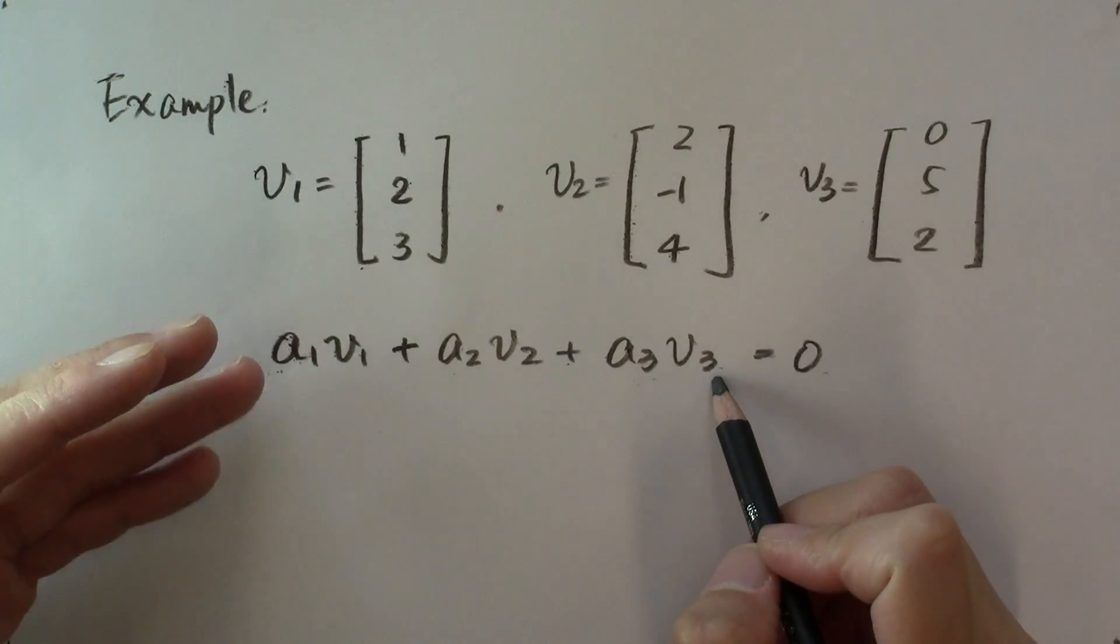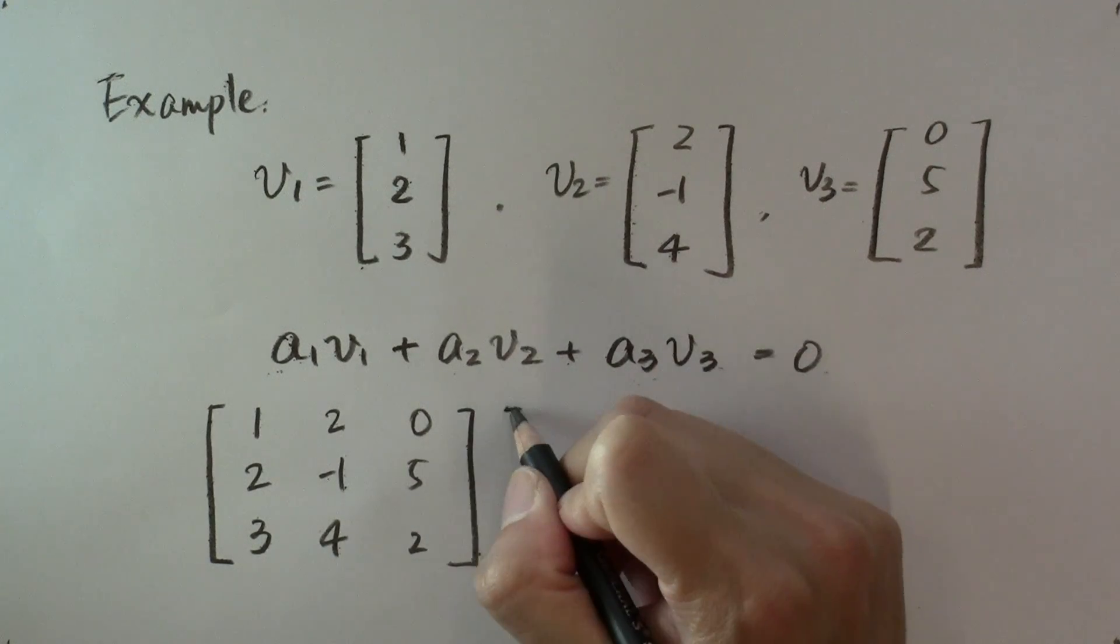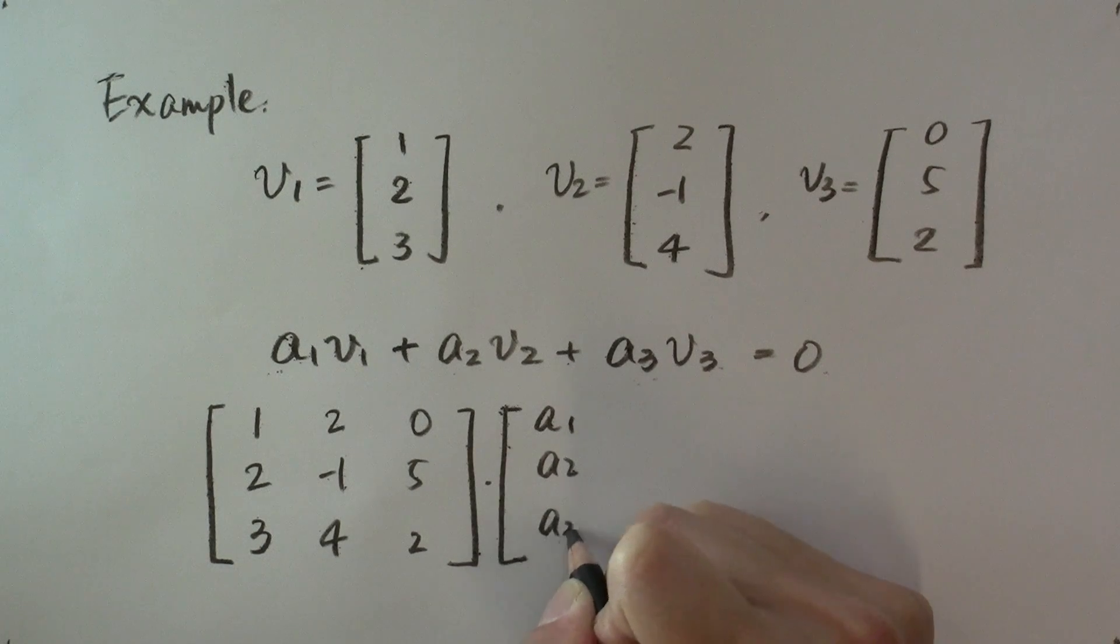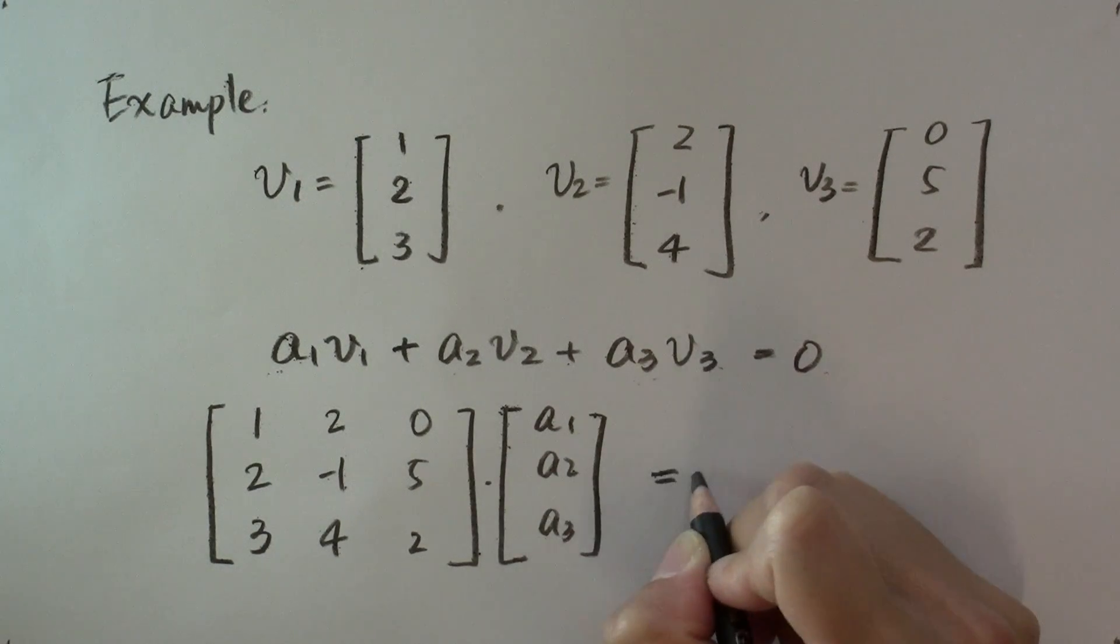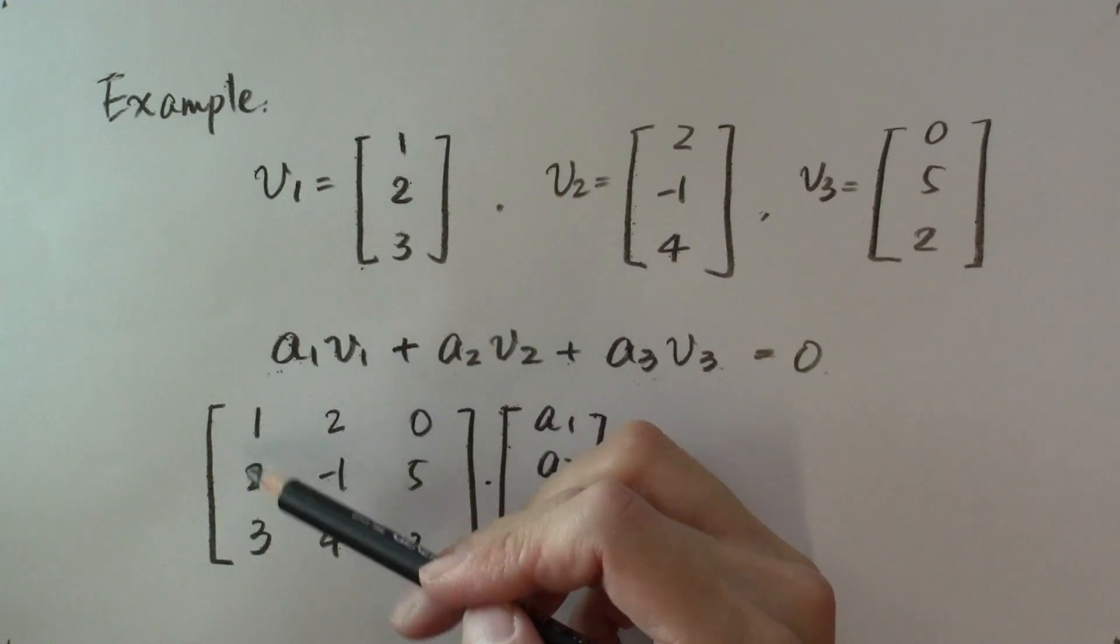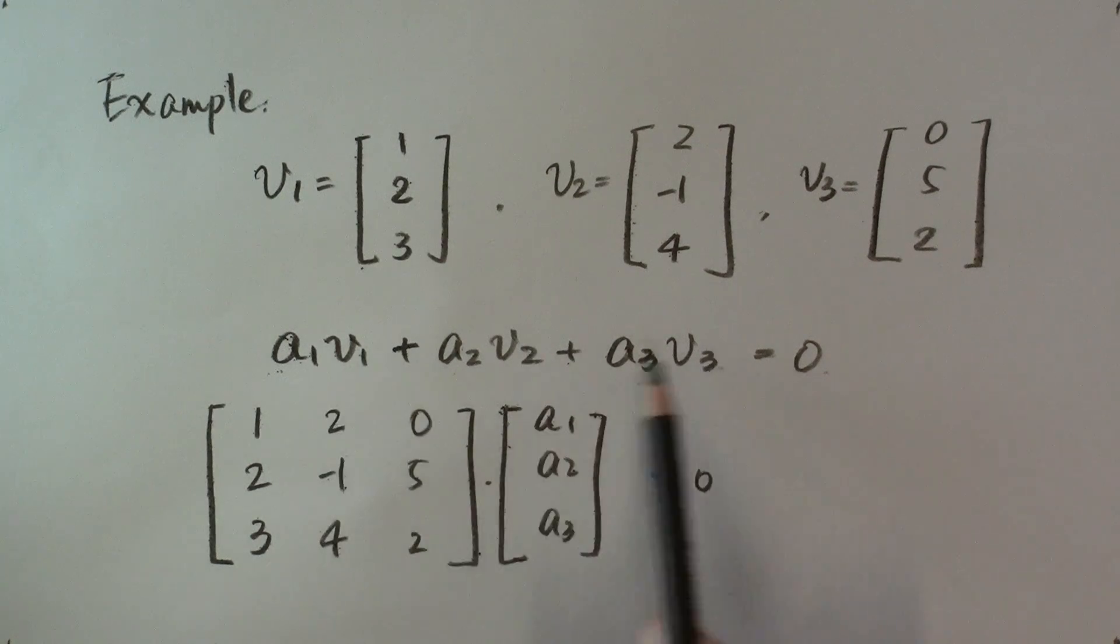And we recognize that the left-hand side is exactly the equation: the matrix with columns [1, 2, 3], [2, -1, 4], [0, 5, 2] multiplying the vector [a1, a2, a3] equal to zero. What I just did is listing all these column vectors as the three columns of a matrix because this expression is exactly equal to the matrix vector multiplication here.